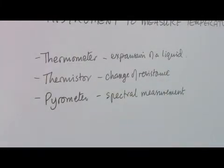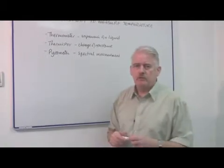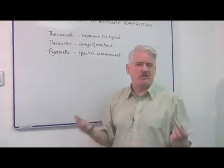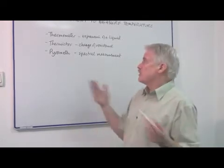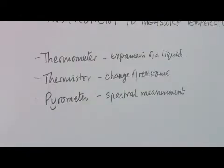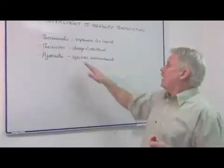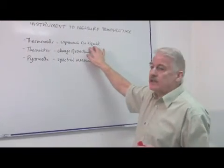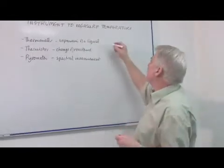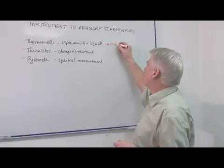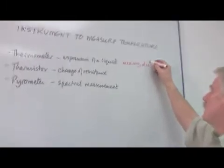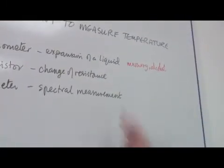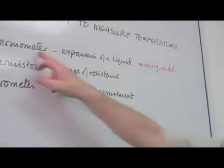But this isn't the only instrument used to measure temperature, although many of the other instruments could also be called thermometers, because thermo is heat, meter means measure, so it's a temperature meter. A thermometer works on the basis of the expansion of a liquid. The liquid is usually mercury or alcohol, and those are the two that are commonly seen in a thermometer.